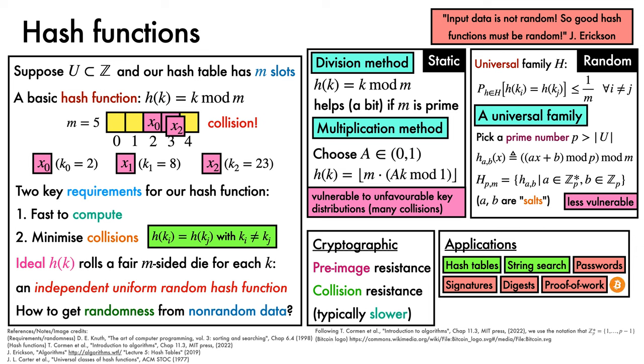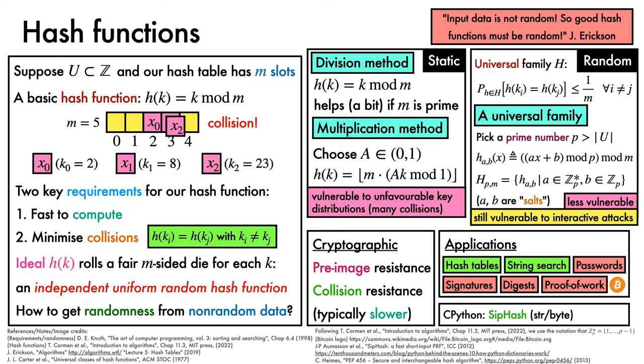Perhaps the canonical example here is the use of SHA-256 as part of the Bitcoin blockchain. Designing robust hash functions for real-world usage is hard. Although the universal hash functions we mentioned earlier are robust against worst-case behaviour on average over different draws of the salts, they are still vulnerable to interactive attacks, where an attacker can observe whether keys are being hashed to the same slot by timing operations. To give an example of how this can be addressed, CPython, since Python 3.4, has used a hash function called SipHash when hashing strings and bytes, as a way to prevent denial-of-service attacks, known as hash flooding, where an attacker deliberately induces collisions.